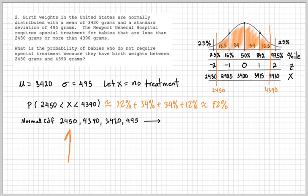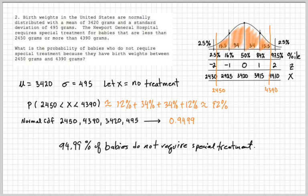Those four values and you get an answer, 0.9499. So 94.99% of babies do not require special treatment. Our estimation was 92%, which was very close.